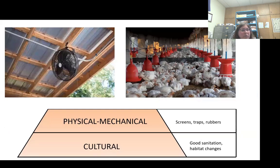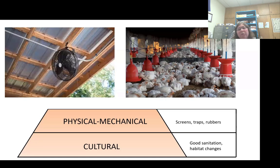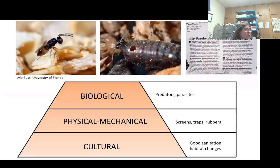Physical and mechanical controls add things that help with sanitation practices and are usually pesticide-free. This includes usage of fans, which help prevent flies from being able to fly effectively, and also screens and traps to catch excess adult flies. Biological controls use predators and parasites that attack larval stages. If you're utilizing parasitoid wasps, make sure they're the ones designed to go after flies.